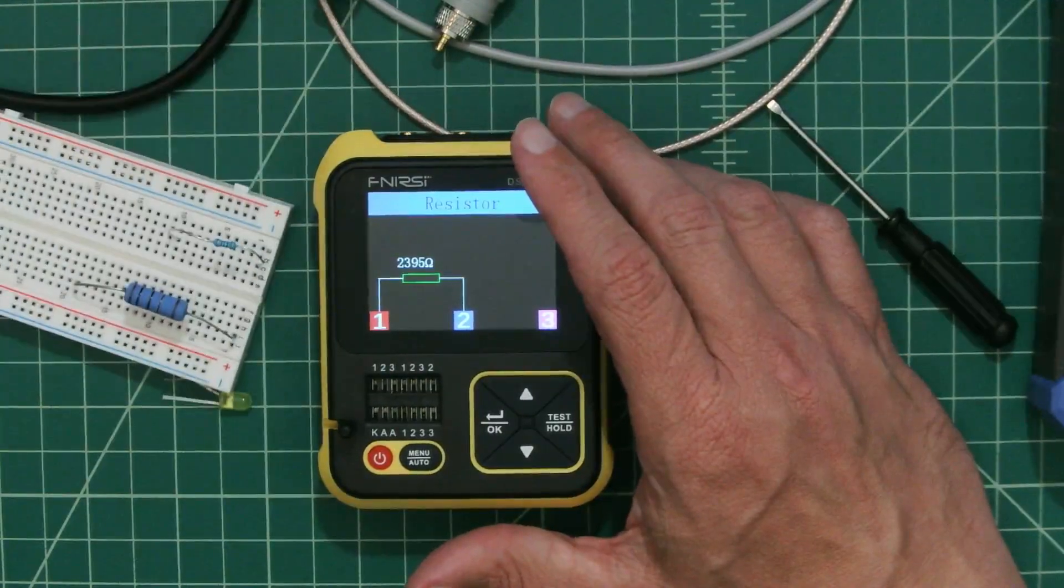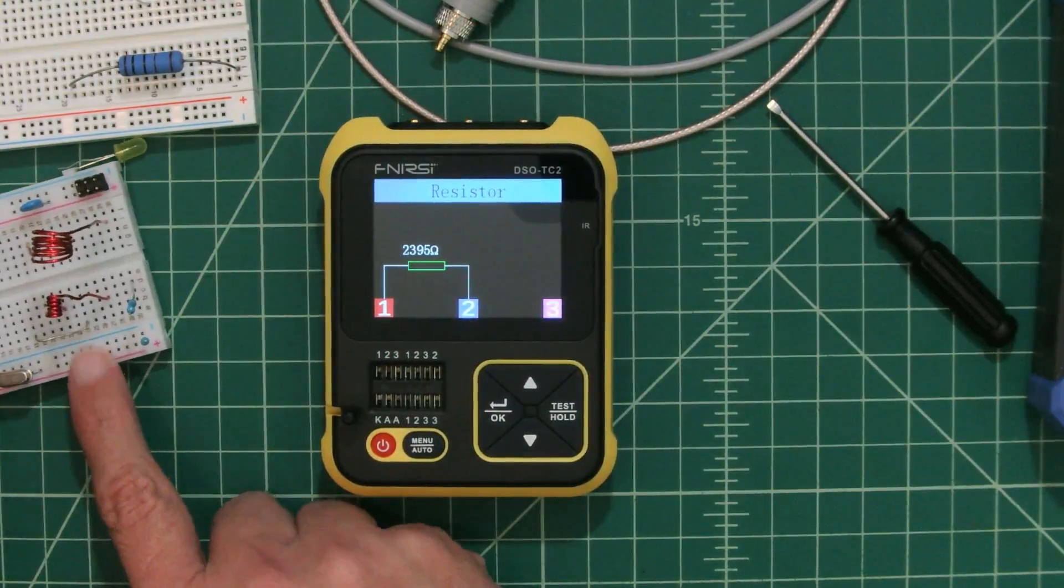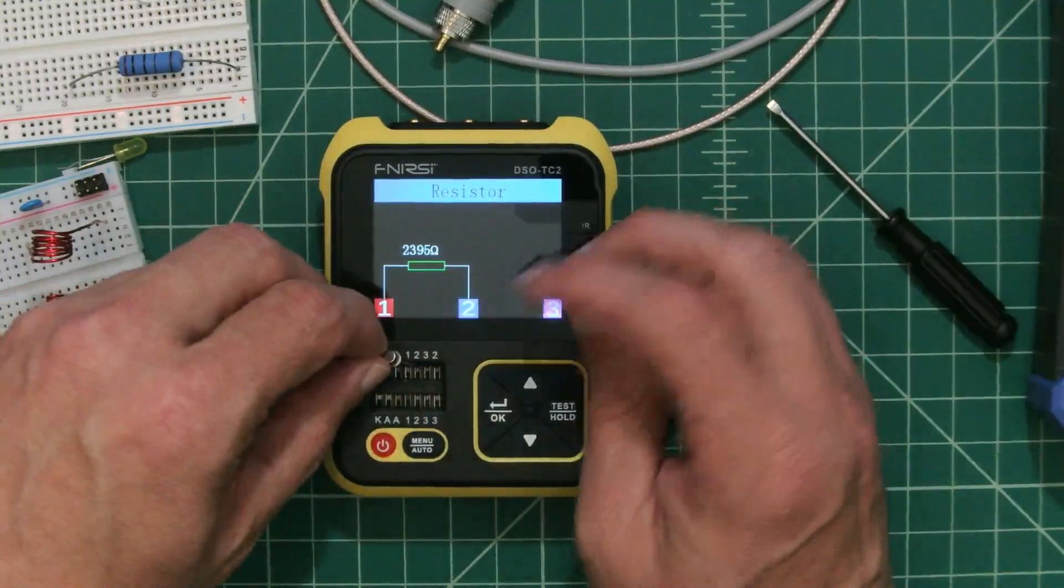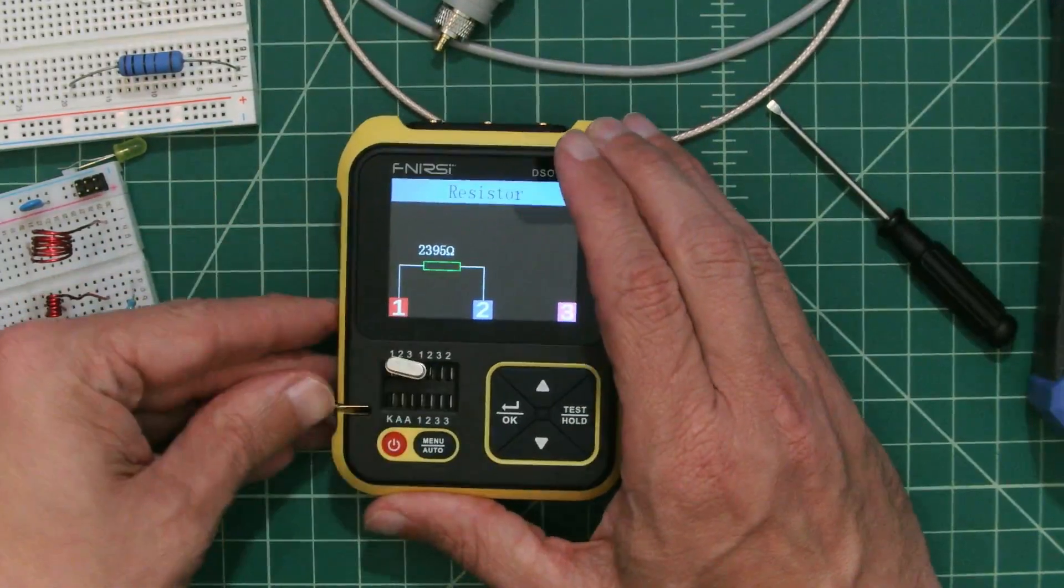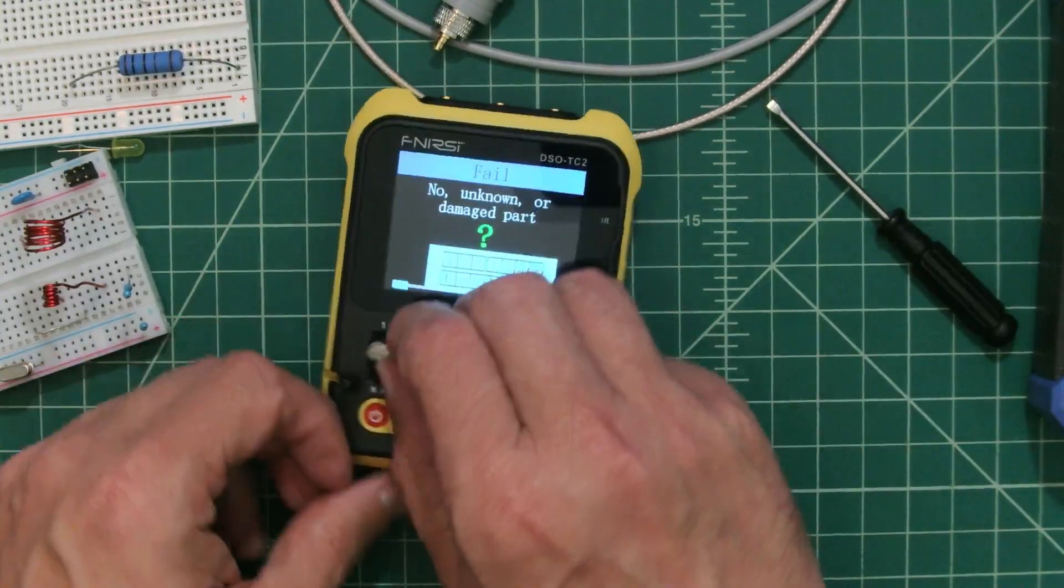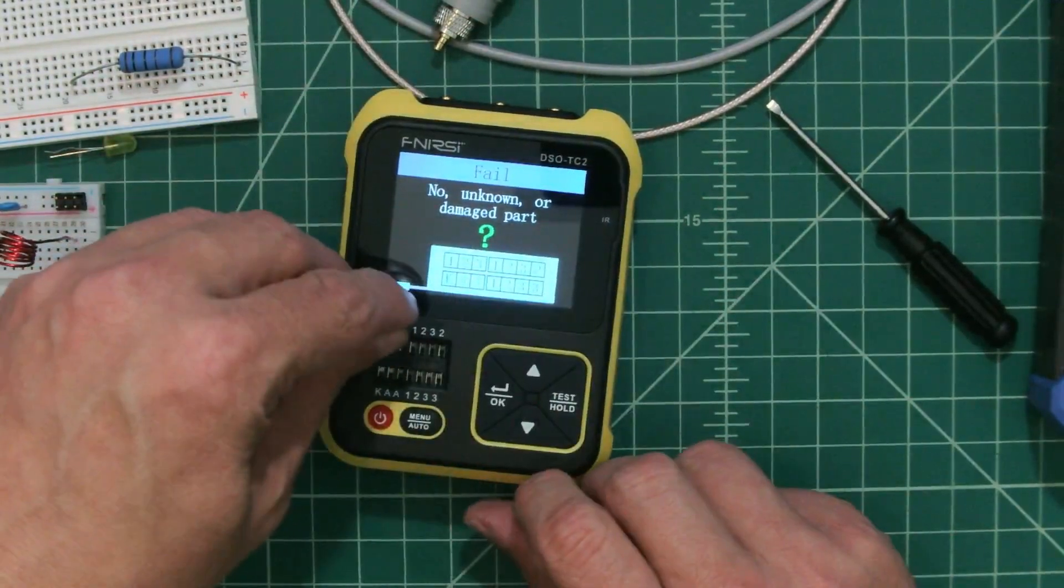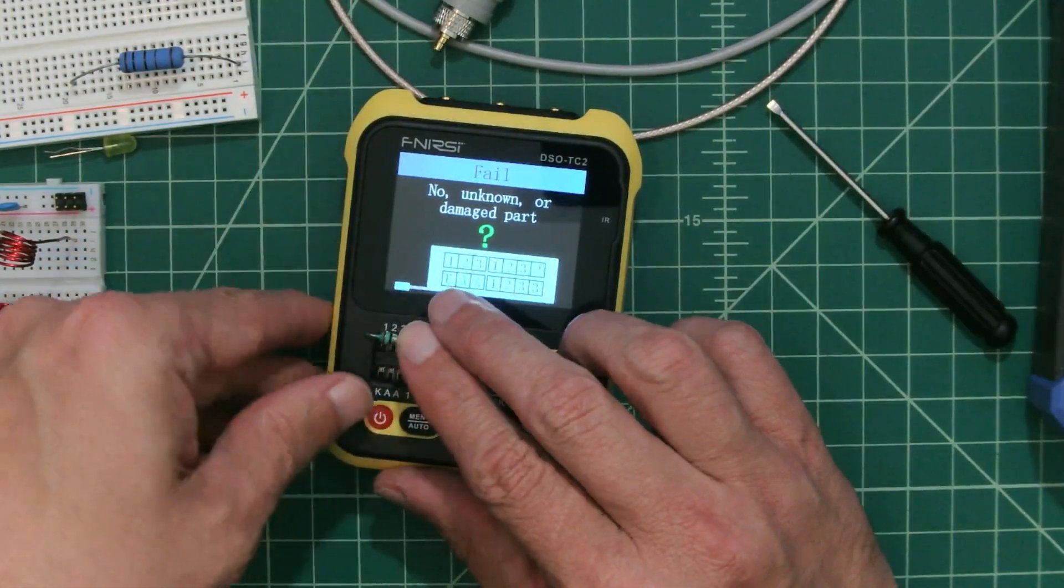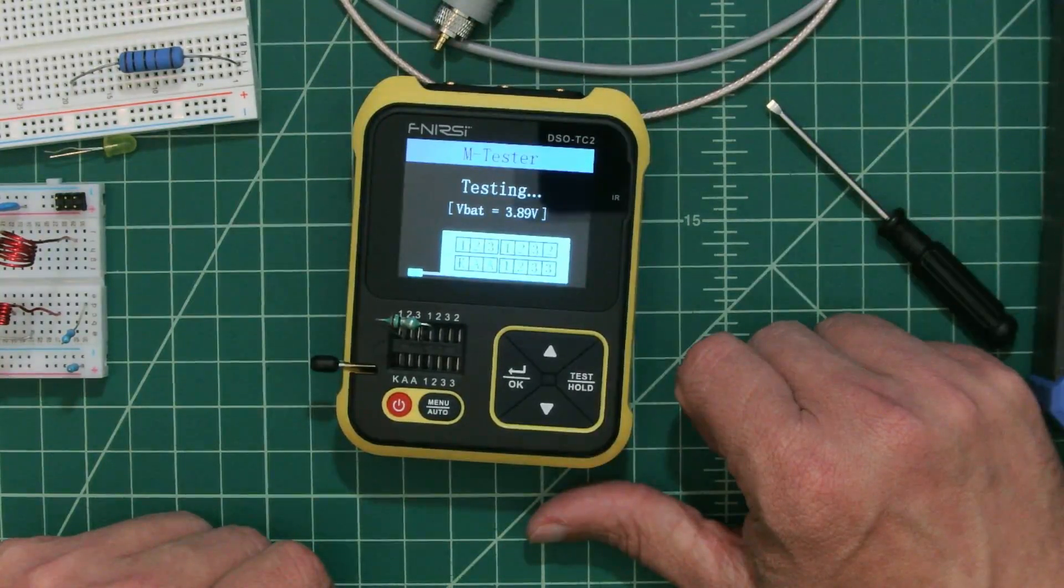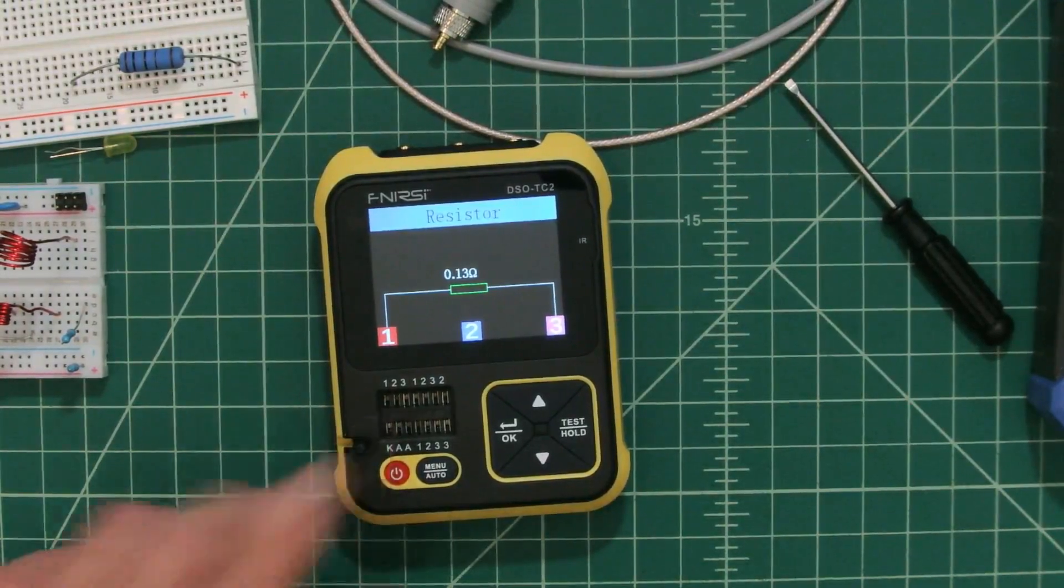Let's see what other components we have around here. I would not expect it to be able to test something like this, which is a crystal, but we're going to try it anyway. Yeah, damaged or unknown part. I kind of expected that. The other thing that we have here is an inductor. It's probably going to see this inductor as a resistor. I'm not going to get too upset here. Yeah, it's shown as a resistor. I figured that to be the case. I do have an LC meter that we use for those kind of things here.